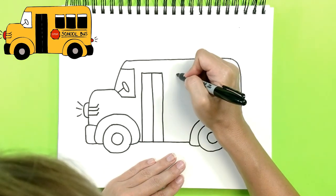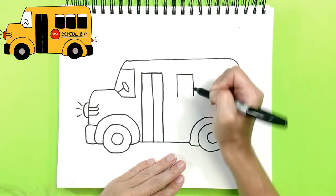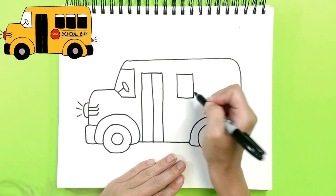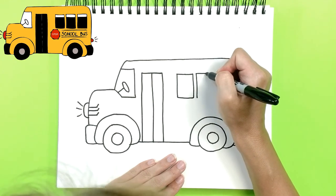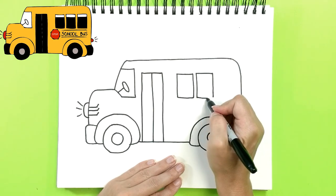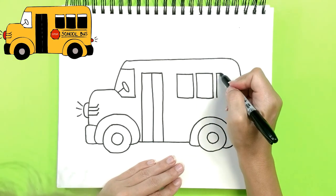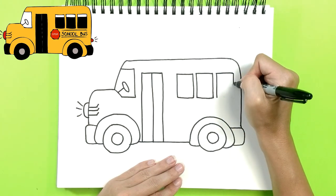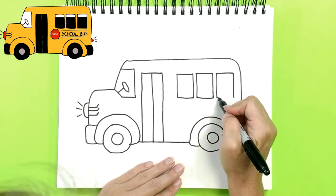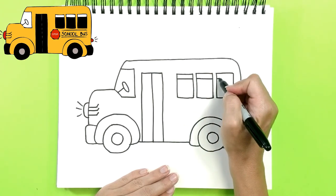And the windows. One. I'm going to draw only three. I'm sure your school bus has more windows than three, so you can draw as many as you want to. So here's the windows. Kids can look outside.